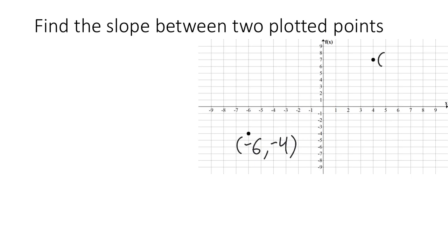Now, looking at the second point, its x-coordinate is 4, and its y-coordinate is 7. So we can say that that point is (4, 7).